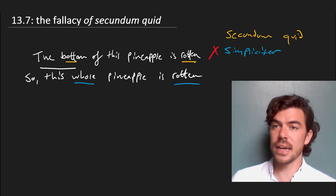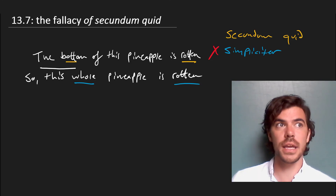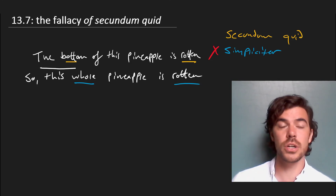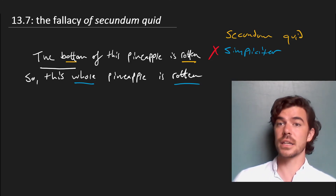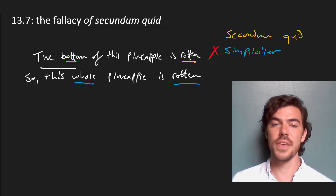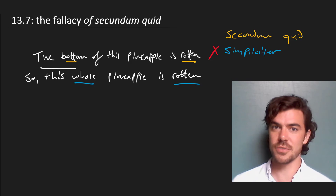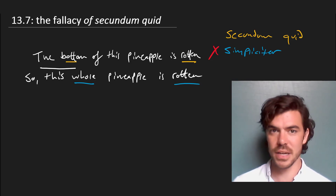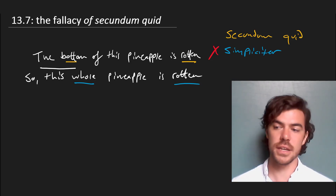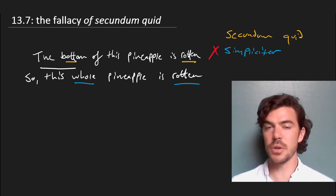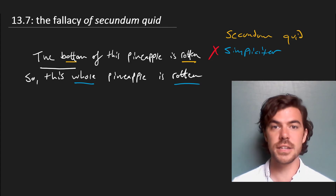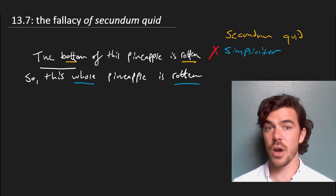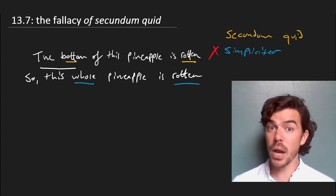But again, it is a fallacy, and there are borderline cases which look convincing but are themselves technically fallacious. If you develop a sense for this, you'll see secundum quid fallacies all over the place, even if it is perfectly reasonable to infer that an entire pineapple is rotten because the bottom is rotten.